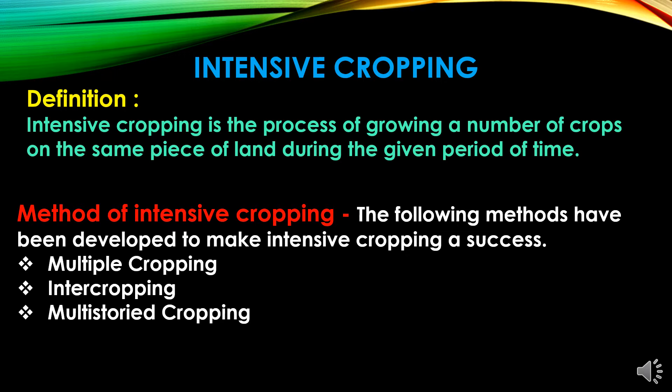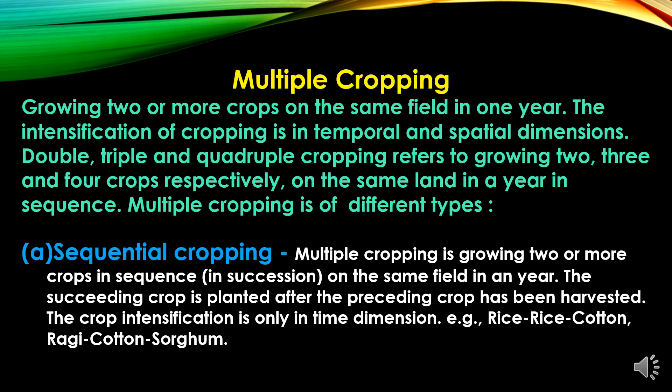The first method is multiple cropping, the second is intercropping, and the third is multi-storied cropping. Multiple cropping is growing two or more crops on the same field in one year. The intensification of cropping is in temporal and spatial dimensions. Double, triple, and quadruple cropping refers to growing two, three, and four crops respectively on the same land in a year in sequence.